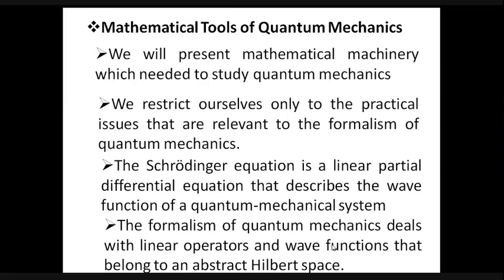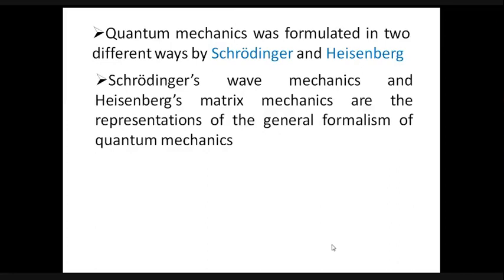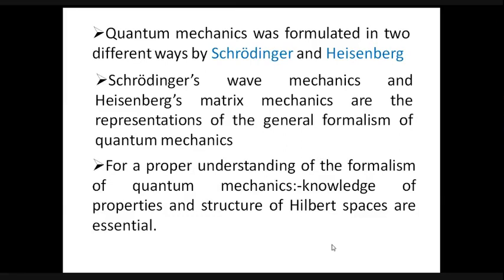When we talk about the formalism of quantum mechanics, it deals with operators which should be linear. The wave function belongs to the space called Hilbert space, or Hilbert space. Quantum mechanics was formulated by Schrödinger and Heisenberg — Schrödinger used the wave mechanics approach whereas Heisenberg used matrix mechanics for the formalism of quantum mechanics. If we want proper knowledge about the formalism of quantum mechanics, knowledge of the properties of Hilbert space is essential.